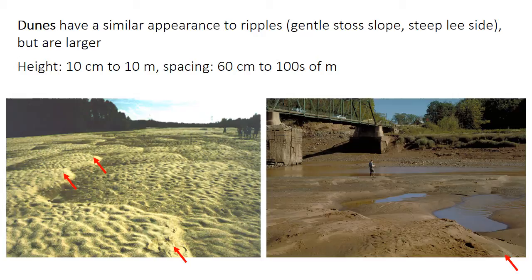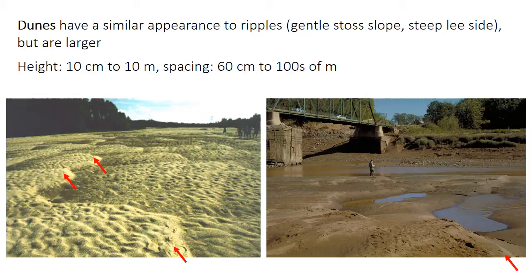The other common type of bedform is the dune. Dunes look like giant ripples — they have a gentle upstream stoss slope and a steep downstream lee side. The height of dunes is typically tens of centimeters, though in unusual circumstances they can reach meters in height if the flow is quite deep, and their spacing is on the order of a few to tens or even hundreds of meters. Like ripples, dunes migrate downstream because of erosion on the stoss side and deposition on the lee face. In the photos, the lee faces are marked with red arrows, and the dunes have ripples superimposed on their surfaces.